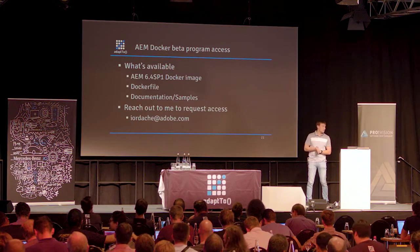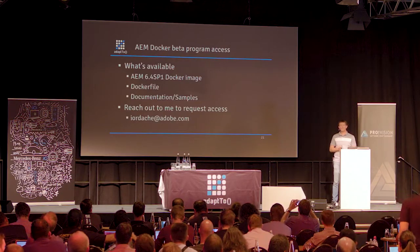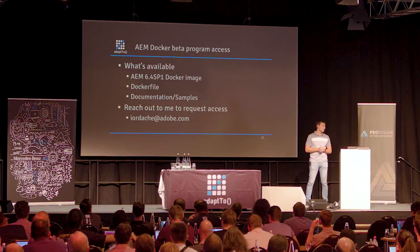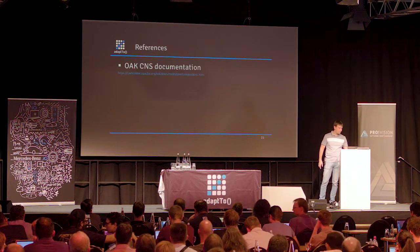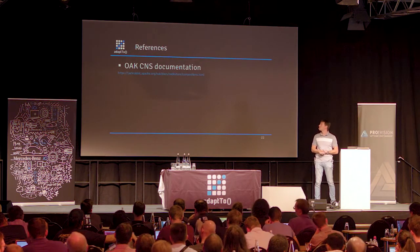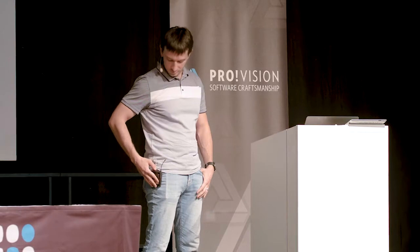We have a Docker beta program access. I kind of underestimated the time it would take to get you guys access. There's a 6.4 SP1 Docker image, Dockerfile, and some documents and samples. Thanks to those who have already shown interest — I have about 30 requests which I've already forwarded to the team handling the Docker beta program access. If you want to request access, those need to go through me. The team managing Docker access promised they will reach out to each and everyone and discuss how this can be achieved. As references, if you want to check out the composite node store, you can check it out on Apache. And that would be it from my side.